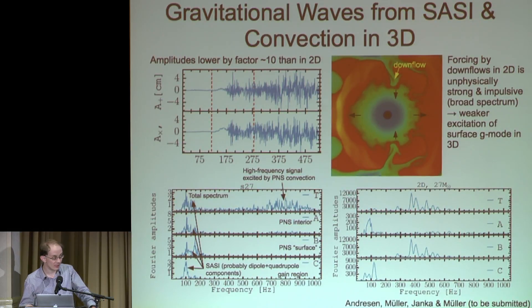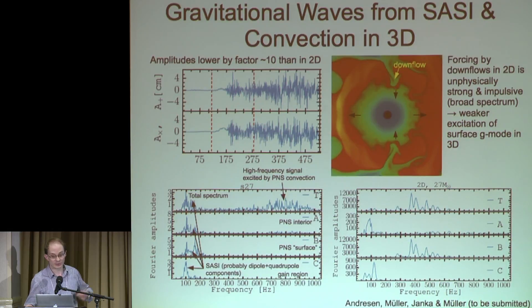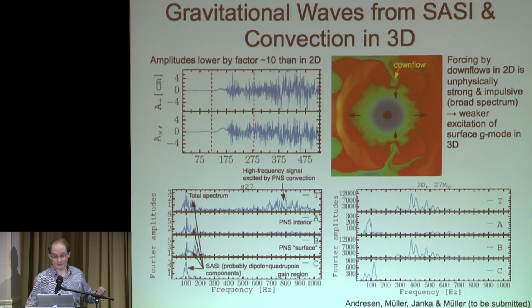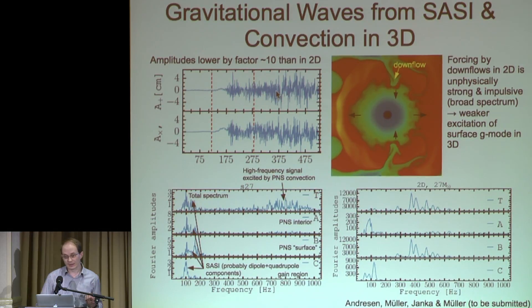Unfortunately, things look a bit different in 3D — not fundamentally different, but notably so in terms of signal amplitudes. This is not simply a projection effect. The structure of turbulent motions in the post-shock region is different in 3D: you tend to have broken-up downflows that excite neutron star surface oscillations less effectively, and they come with a frequency spectrum of excitations that doesn't overlap well with the eigenfrequency of the neutron star surface G-mode. That tends to bring the high-frequency signal down by a factor of 10 in 3D compared to 2D.